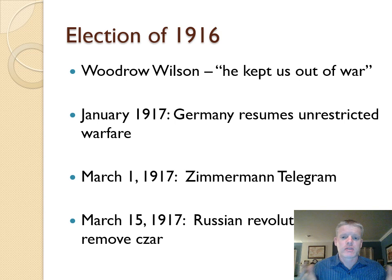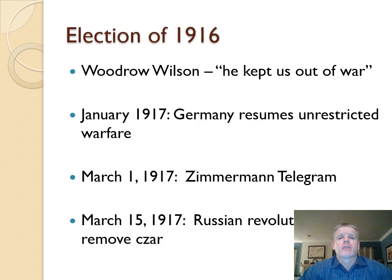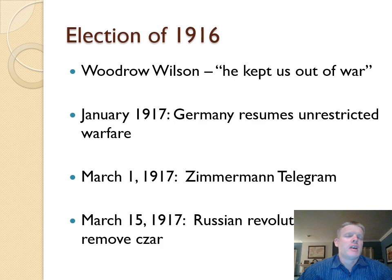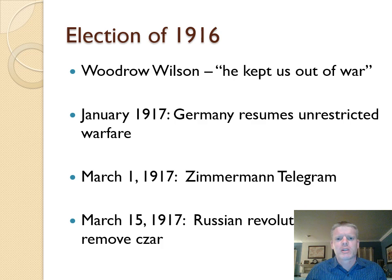On March 1st, the Zimmermann Telegram is intercepted and leaked to the press, which really riles up public opinion. The German ambassador sends a note to the Mexican president essentially saying: if you side with Germany and attack the United States, we'll help you get back all the land you lost in the Mexican-American War — California, New Mexico, Arizona — all back in Mexico if only Mexico will side with Germany.